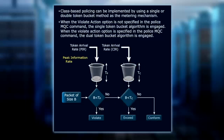Class-based policing can be implemented using either a single or a double token bucket for metering. When a violate action option is not specified in the MQC command line, a single token bucket algorithm is used. When the violate action option is specified, we get dual token buckets. The first bucket uses the peak information rate and the second uses the committed information rate. If we don't specify the violate action, we only have a single bucket. But if we turn on that violate action — for example, set it to drop — then the dual bucket algorithm kicks in, allowing a second collection of tokens and bandwidth available to send our information.